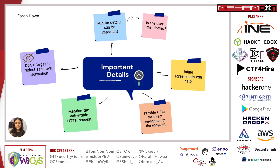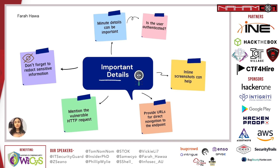Provide URLs for direct navigation to the endpoint — if we can't find something on the UI or our layouts differ, a URL lets us navigate directly and reproduce the bug. Also mention the vulnerable HTTP request; if there's any manipulation of an HTTP request involved, including it means we can use it directly if needed. And always redact any sensitive information — cookies, tokens, credentials — from your report.